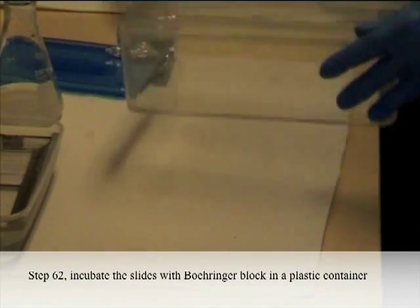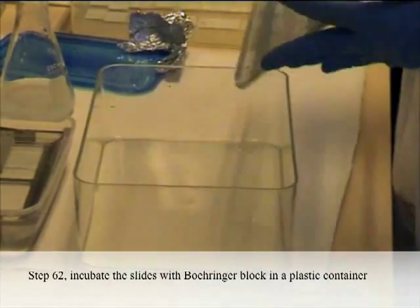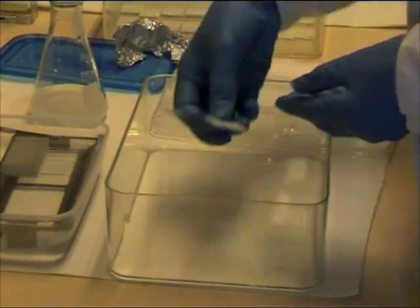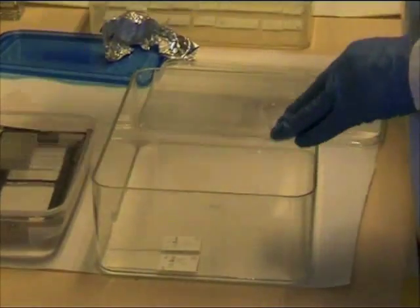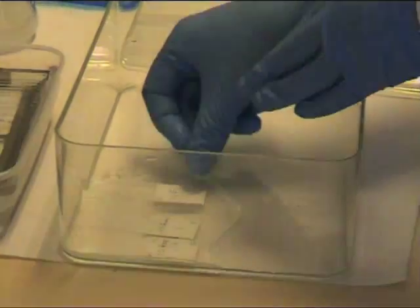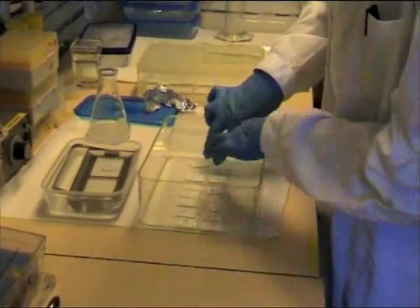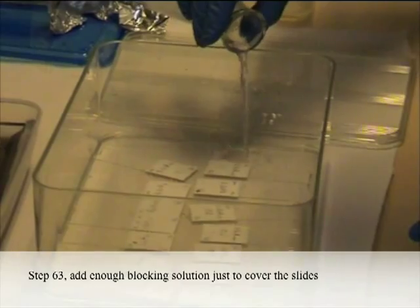Step 62: Incubate the slides with the Boehringer block in a plastic container. Step 63: Add enough blocking solution just to cover the slides.